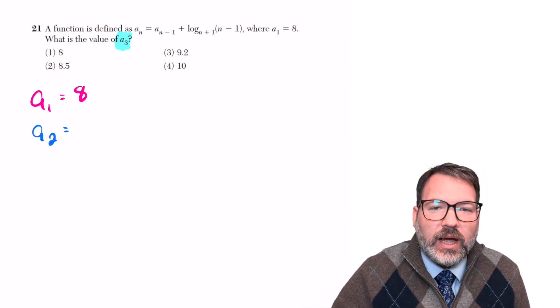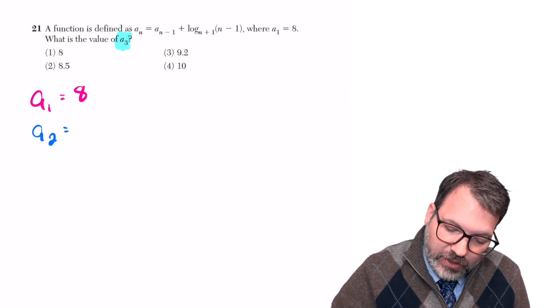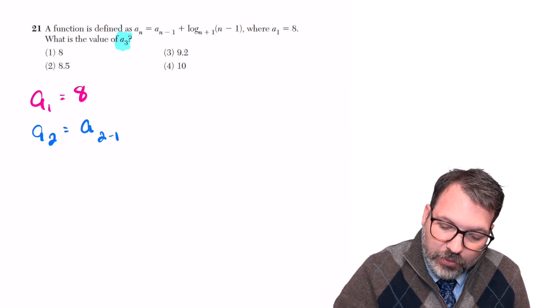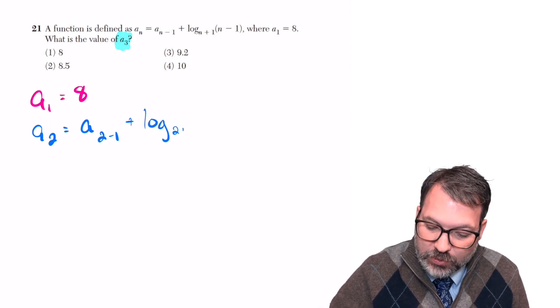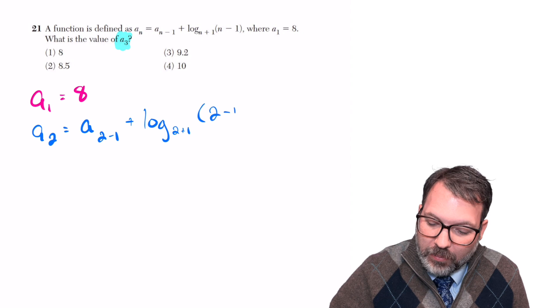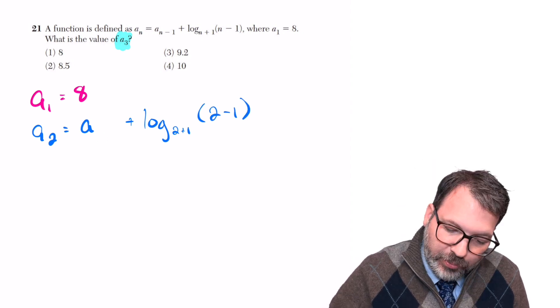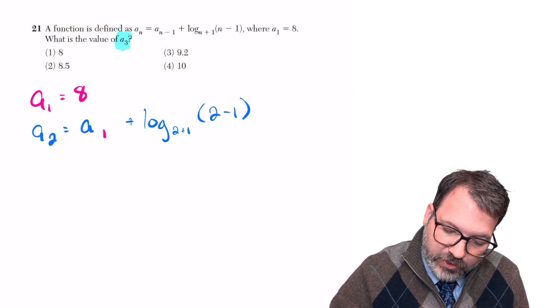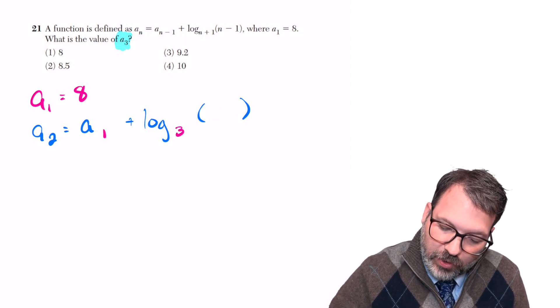In this case we're just going to iterate a couple times, so let's go ahead and find a sub 2. a sub 2 is going to be equal to a sub 2 minus 1, that's the n minus 1 here, plus log base 2 plus 1 of the quantity n minus 1. So again, in this case that's going to be 2 minus 1. Let's go ahead and replace some of these: 2 minus 1, of course, is 1, 2 plus 1 is 3, and 2 minus 1 is 1.